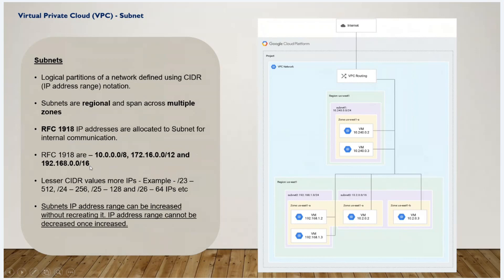In Google Cloud, when you create a subnet range, you need to create private IP addresses within the RFC1918 ranges. The first two and the last two IP addresses in any subnet are reserved and used by Google Cloud for internal purposes. The last IP address is used as the gateway router.